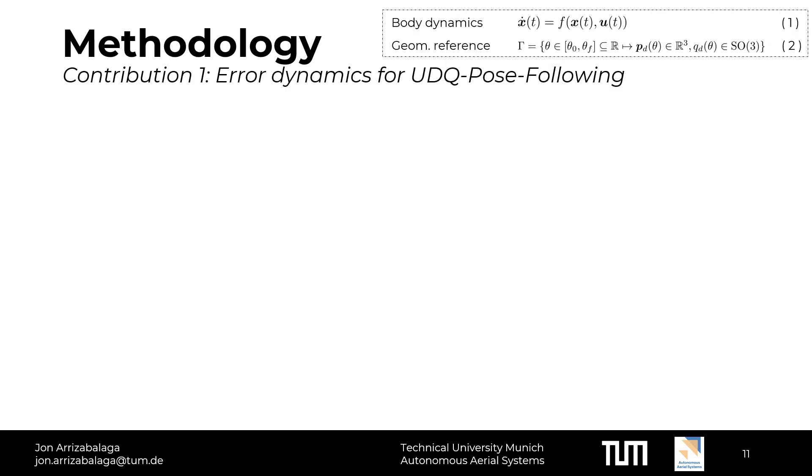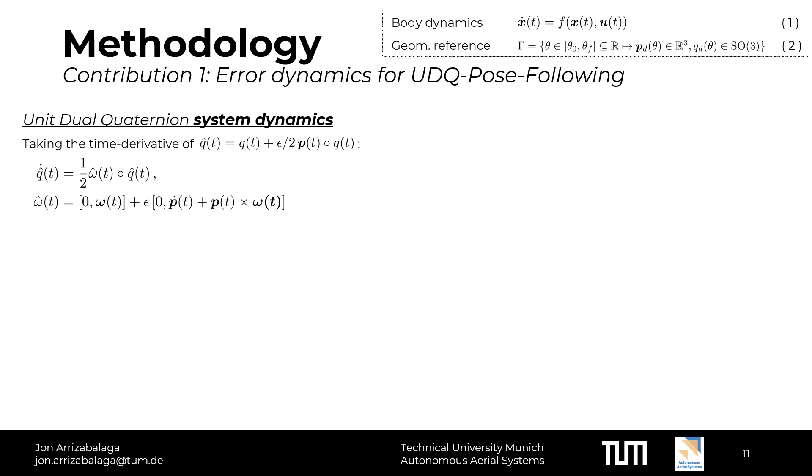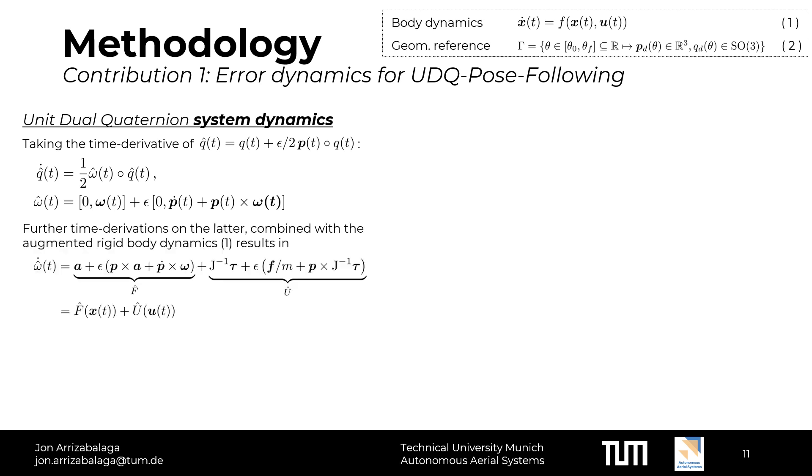In the first contribution, we derive the error dynamics required for unit-dual-quaternion-based pose-following. We start by converting the augmented system dynamics to a dual-quaternion representation. To do so, we derivate the dual-quaternion's definition on time. Besides obtaining the dual-quaternion equation of motion, we also get the dual-twist. To derive each equation of motion, we combine it with the augmented rigid body dynamics and differentiate it with respect to time. The resulting equation can be rearranged into two variables: f for terms that rely solely on the states, and u for terms that rely solely on the inputs.